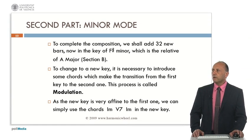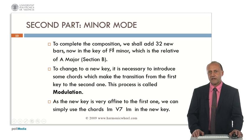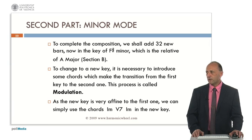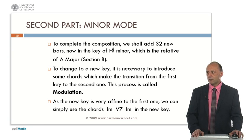Now we will compose the second part of the composition, so we will add thirty-two new bars, but now in the key of F-sharp minor, which is the relative of A minor. To change to a new key, it is necessary to introduce some chords which make the transition from the first key to the second one. This process is called modulation. As the new key is very affine to the first one, we can simply use the chords 1, 5, 1 in the new key.